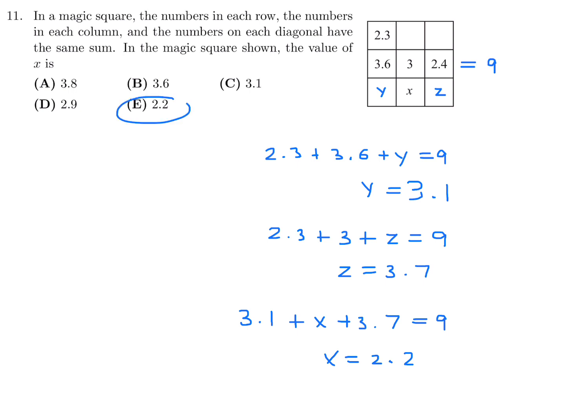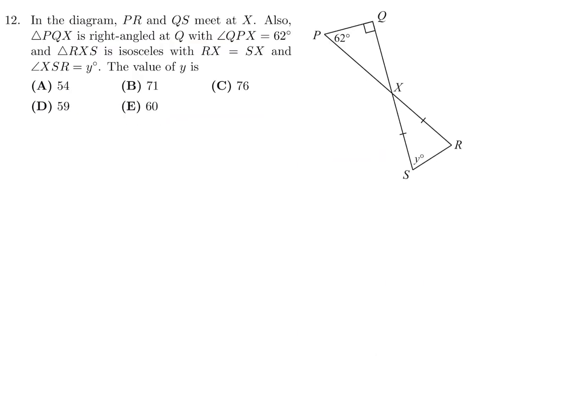In the diagram, PR and QS meet at X. Also angle PXQ is a right angle, angle QPX is 62 degrees, and triangle RXS is isosceles with RX equal to SX, and angle XSR equals Y. The value of Y is — since there's a 90-degree angle, we can figure out the adjacent angle: it's just 90 minus 62.